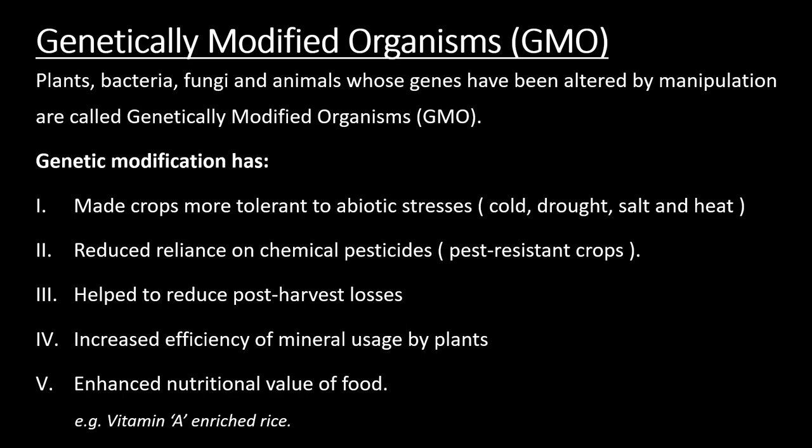Genetically modified crops have five advantages. First, they made crops more tolerant to abiotic stresses like cold, salt, heat, etc. Second, the crops are pest resistant, reducing reliance on chemical pesticides. Third, they help reduce post-harvest losses. Fourth, they increase the efficiency of mineral usage by plants. Fifth, they enhance the nutritional value of food — for example, Vitamin A-rich rice. A question may come: give the applications of genetically modified crops.